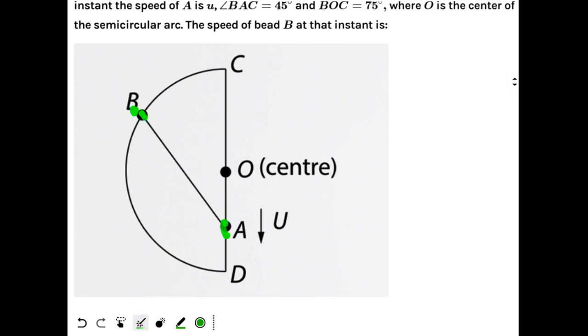Beads A and B are connected by an inextensible string. That means along the string, the components of their velocities should be equal. If B has velocity V, then B is moving along the semicircle so the velocity of B is along the tangent to the semicircle. The component of V in this direction should equal the component of U in this direction.